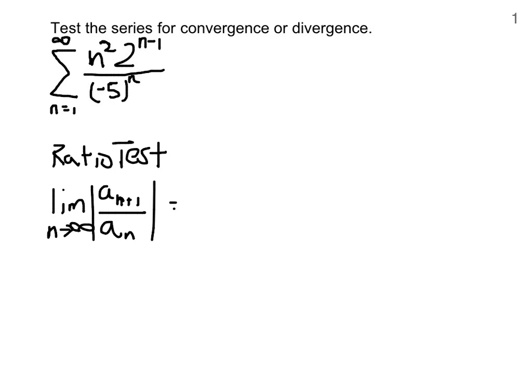Here's a quick way to skip a couple algebraic steps. Recognize that there are three separate terms: n squared, 2 to the n minus 1, and negative 5 to the n. If we divide a sub n plus 1 by a sub n, we replace n by n plus 1, and give each term their own fraction.